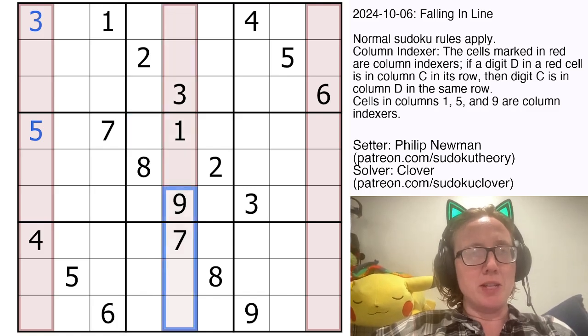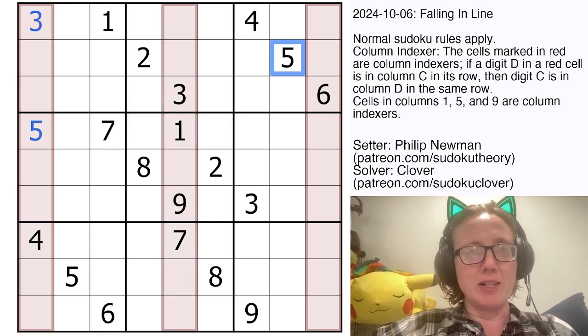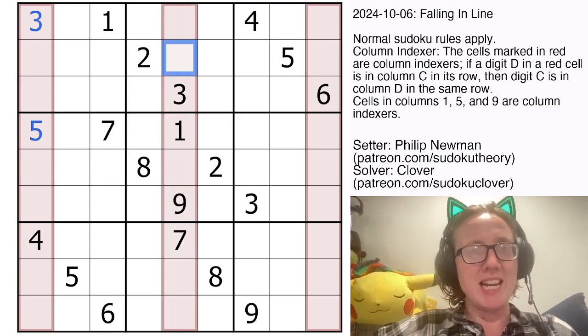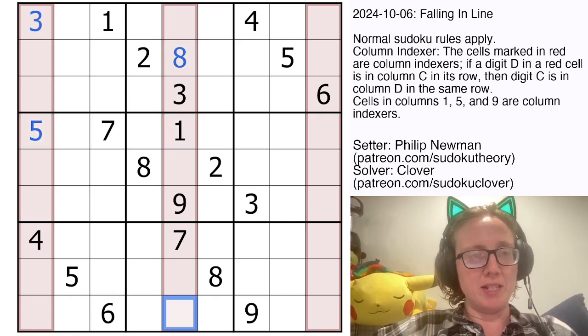The middle column tells you the locations of all of the fives in the puzzle, so here there is a five in the eighth column from the left, so I'm going to put an eight here in the middle column. Here there's already a one in the middle column, showing us that the five is in the first column from the left, and here there is a five in the second column from the left, so I'm going to place a two.